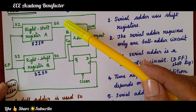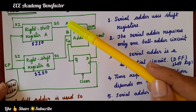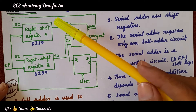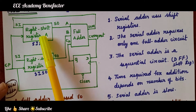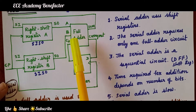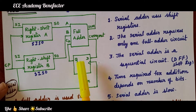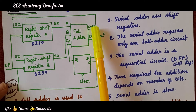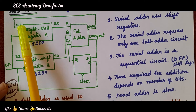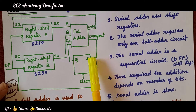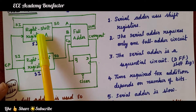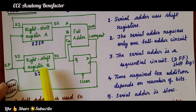The full adder has three inputs: A, B, and carry in (C in). A is the output of right shift register A, B is the output from right shift register B, and carry in is the output from the D flip-flop. The full adder's sum output goes to right shift register A as serial in, and the carry output goes as D input to the D flip-flop.